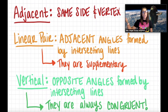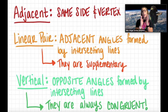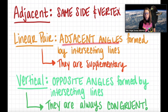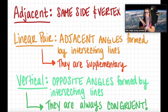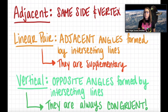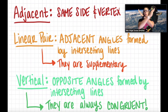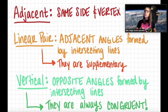To quickly recap: adjacent angles share the same side and vertex — they are literally touching. Linear pairs are adjacent angles formed by intersecting lines, meaning they are supplementary. Vertical angles are the opposite angles formed by intersecting lines — top and bottom, left and right — and they are always congruent, meaning they have equal measure. That's it for today's lesson. See you next time.